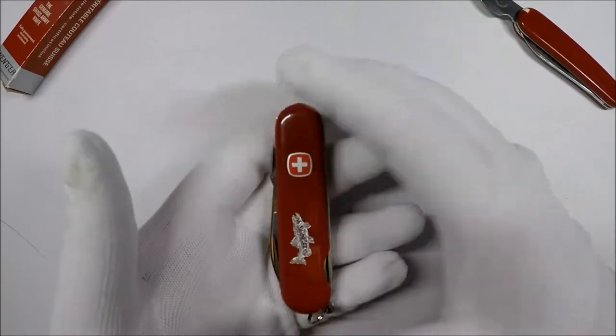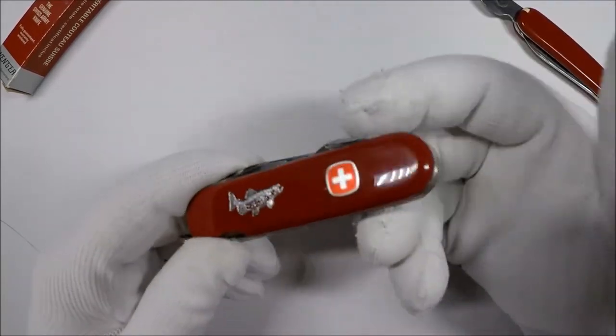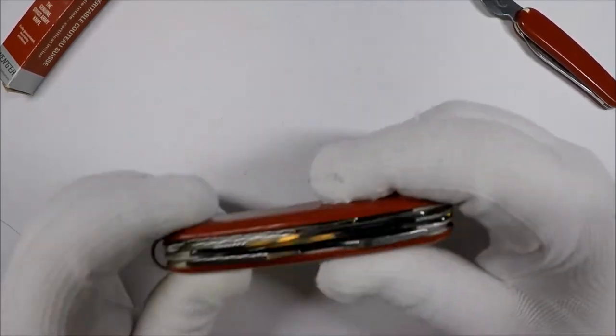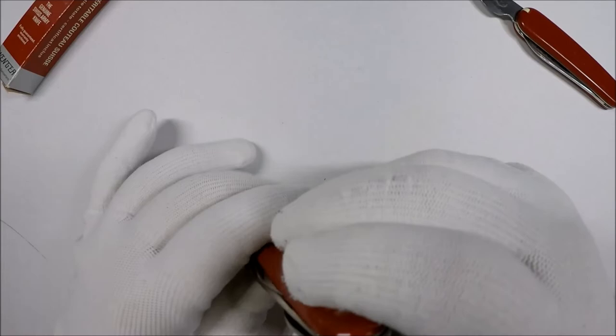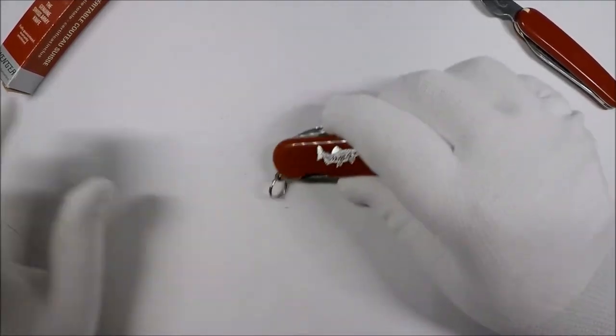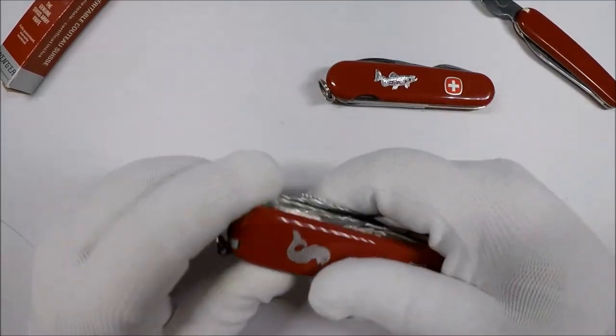Anyway, if you're looking for one of these, the trouts pop up every now and then on eBay. If you want a comparable model, probably the closest is either the fisherman or the angler by Victorinox. And I'll include links to both of those in the description if you want to check them out.